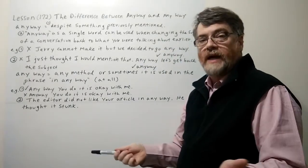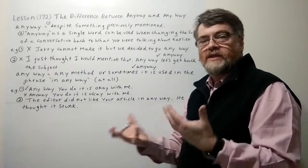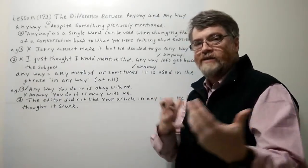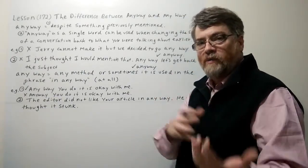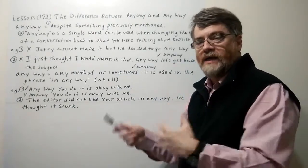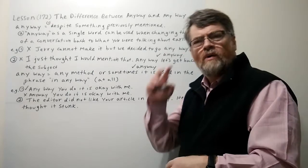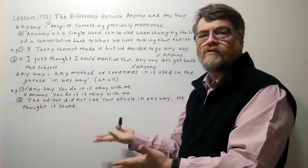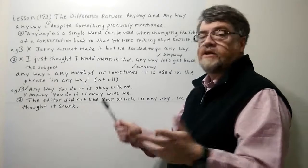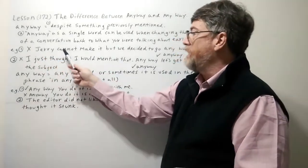So let's look at the first example. This is one where students could get confused — they could go either way and write the word as one word or two words wrong. In writing they may think, 'Did I see anyway as one word or was it two words?' and they might use the wrong one in the wrong situation. So let's look at the first example where it would be wrong, marked with an X.